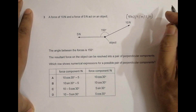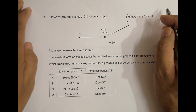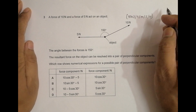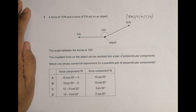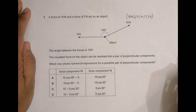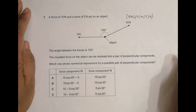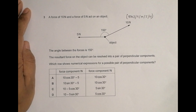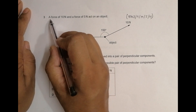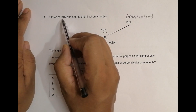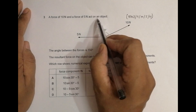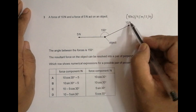Hello folks, this is the 2021 May/June Paper 11, Question 3. From this question starts the variant 1 of the May/June 2021 paper. This question is concerned with the chapter of vectors, or we can say forces as well. It says a force of 10 Newton and a force of 5 Newton act on an object.